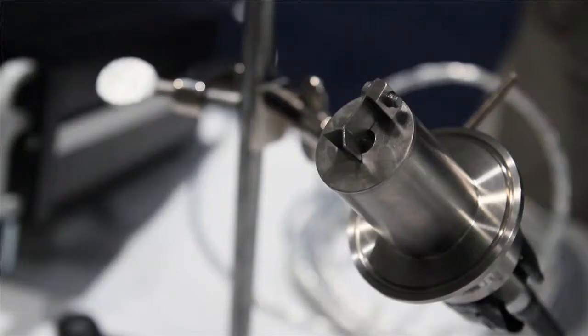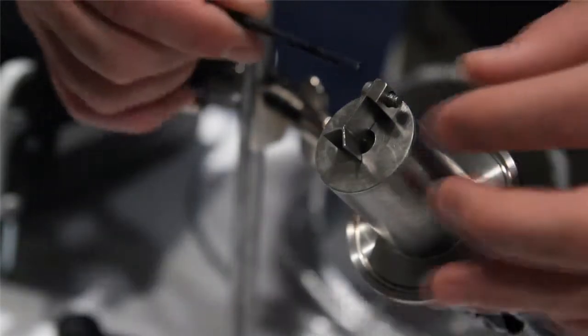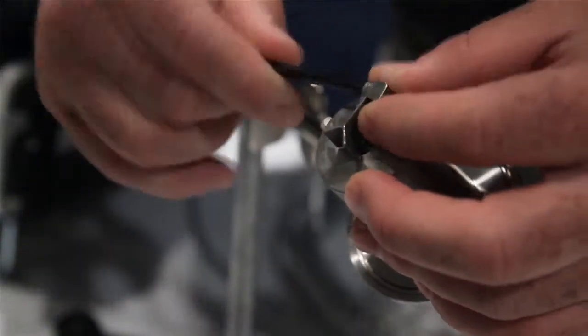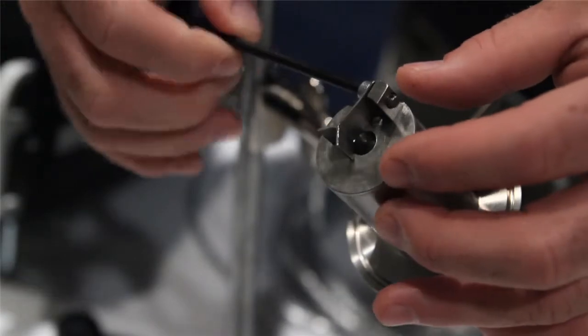Step 1. Remove the sensor from the process line making sure the cable connections are not stressed or twisted in any way. Use the supplied Allen wrench to remove the set screw holding the deflector in place.